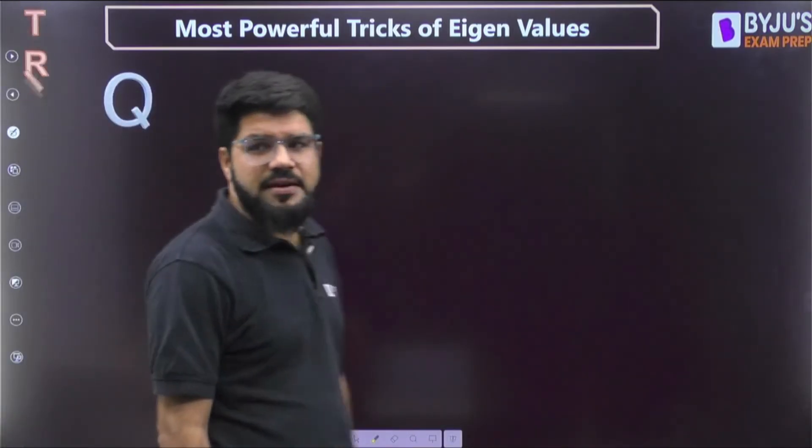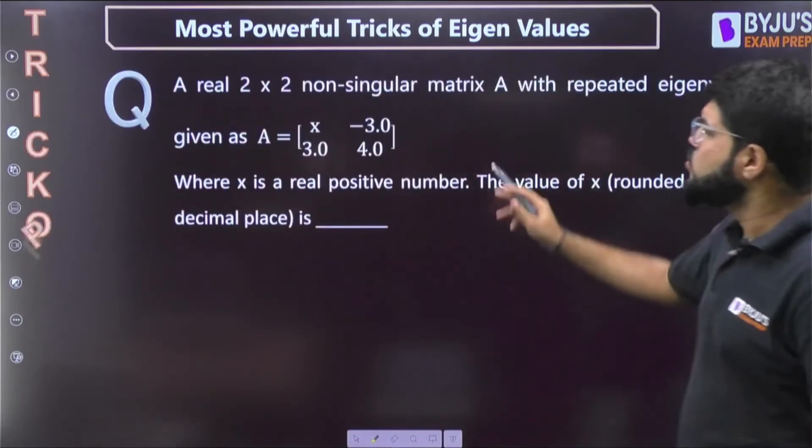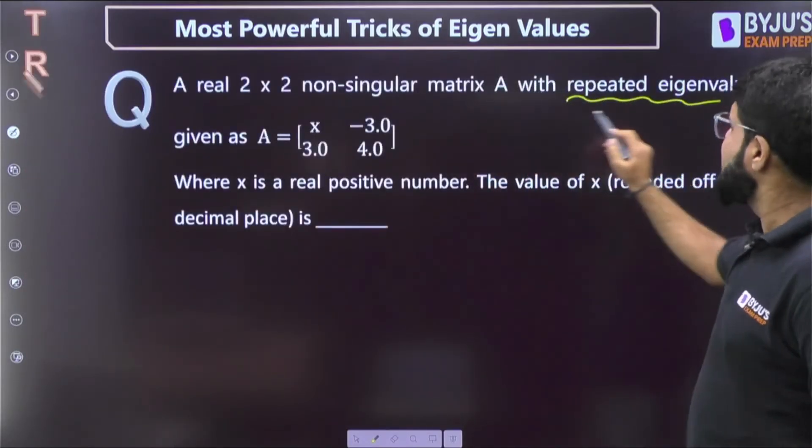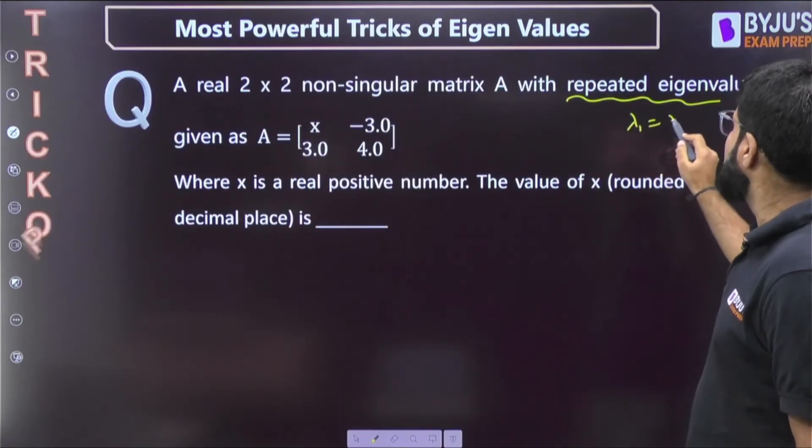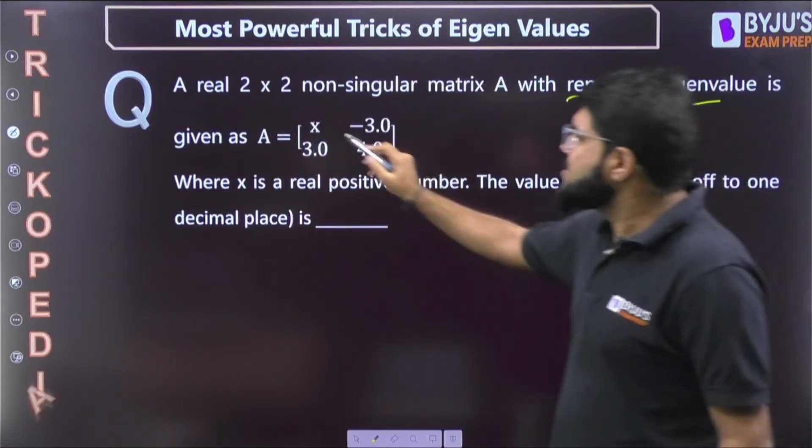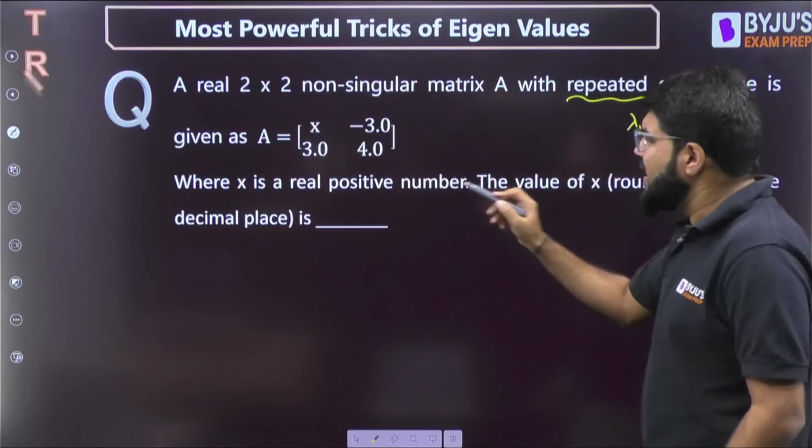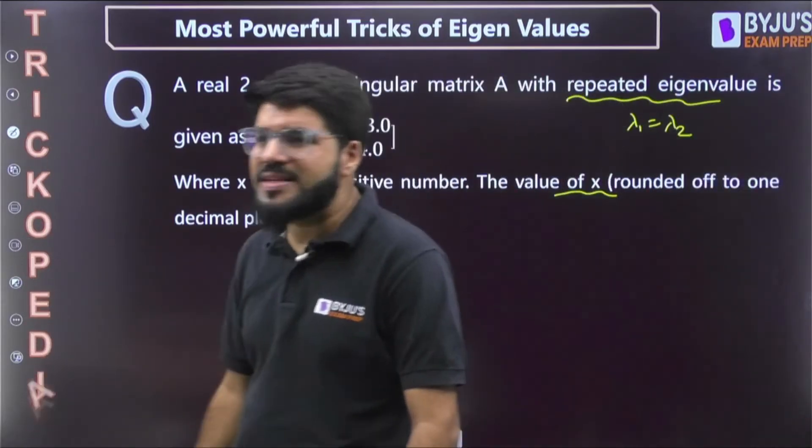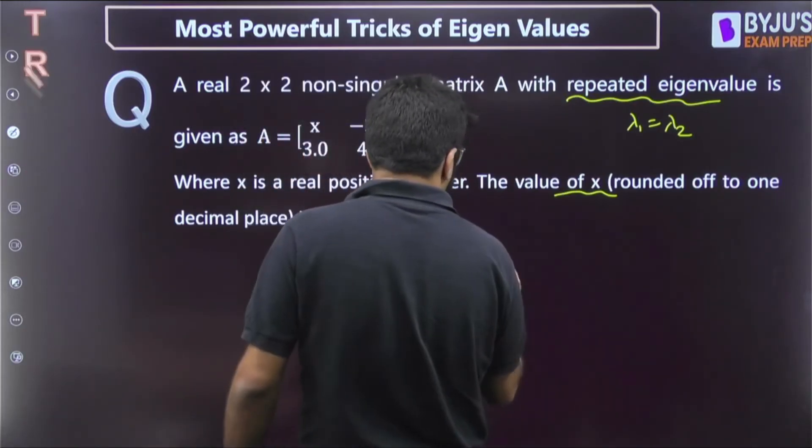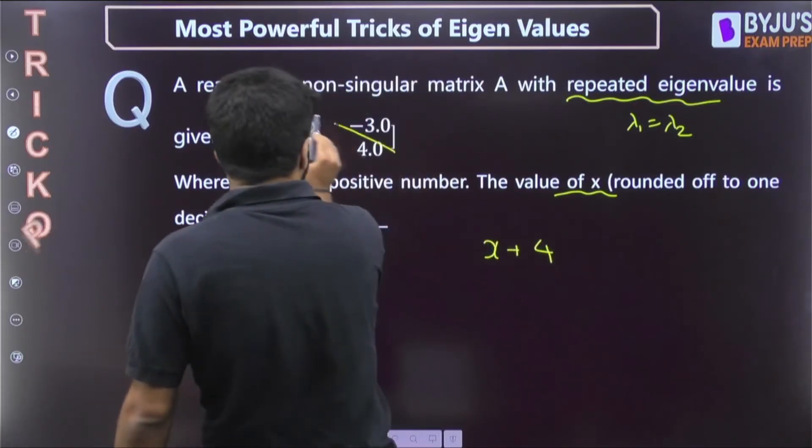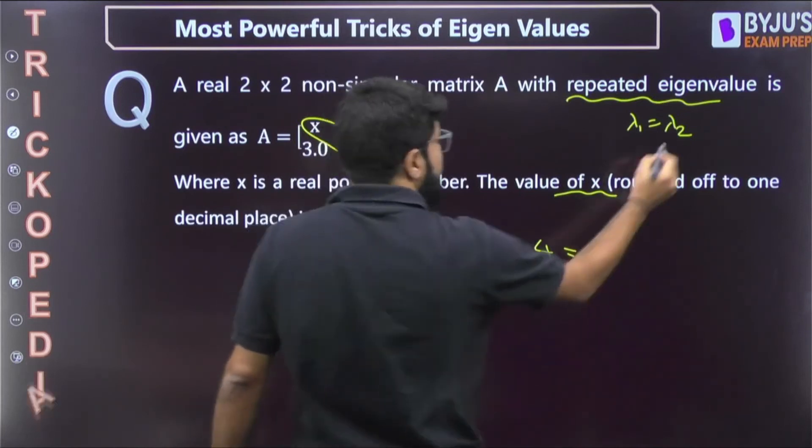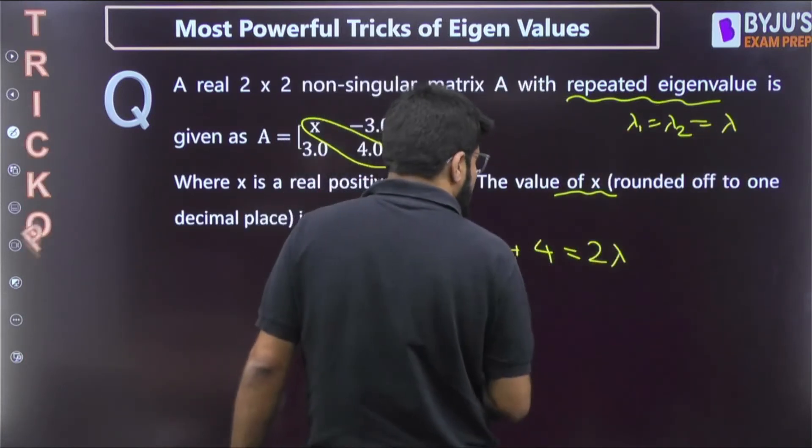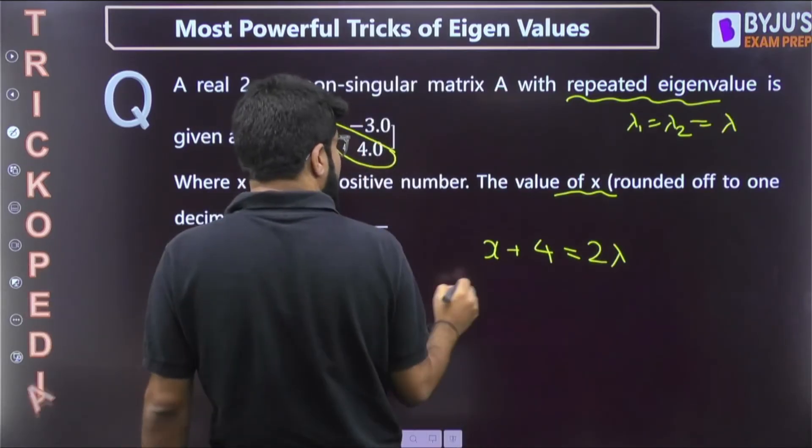Moving ahead to yet another question. A 2 cross 2 non-singular matrix with repeated eigenvalue, repeated means there is a 2 cross 2 matrix so both the eigenvalues are same, and this matrix is given to you where x is a positive real number. What is the value of x? A numerical answer type question. We are very clear that the trace of the matrix, that is x plus 4, should be equal to, let's say both the eigenvalues are equal to lambda, so this should be sum of eigenvalues, that is 2 lambda.